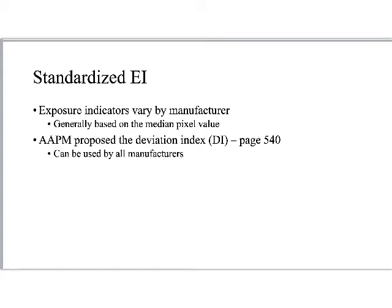Looking at page 541 in the reading — or page 537 in the reading packet — the first sentence after 'speed class' just defines speed. Then there's a part in italics that says digital speed works pretty much the same way as traditional film screen speed.